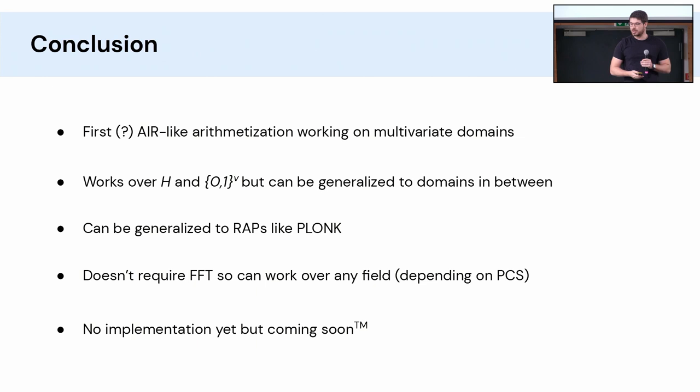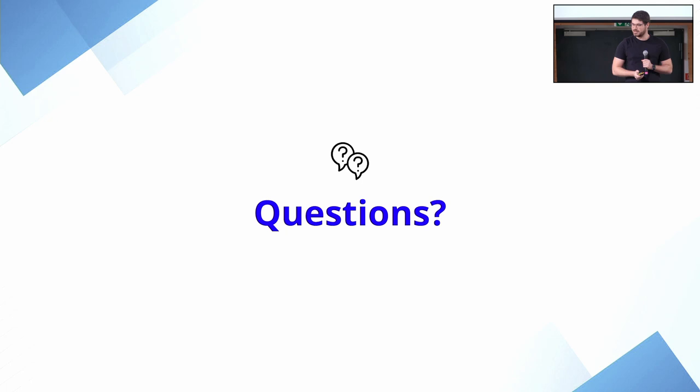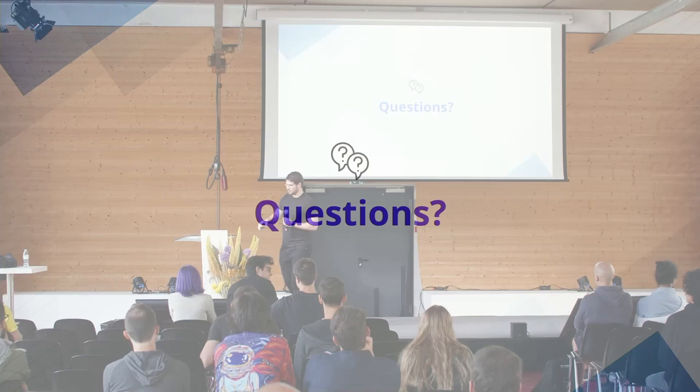So to conclude, to the best of my knowledge, it's the first AIR-like arithmetization that works with multivariate domains. I've only focused on H and the cube today, but this can be generalized to domains in between. There's some compromise there, but it could be faster. All of this can be generalized to arithmetizations like PLONK. PLONK is basically just AIR with a permutation argument. So you can very easily extend everything to PLONK. None of this requires FFT, so you can work over any field, including fields that don't have a high two-adicity. And I don't have an implementation yet, but I'm working on it. That's all for today.